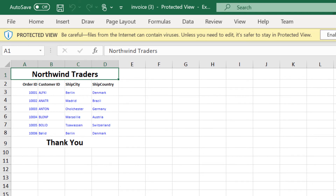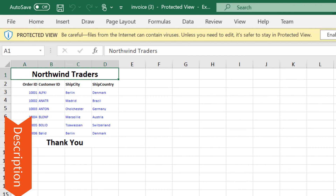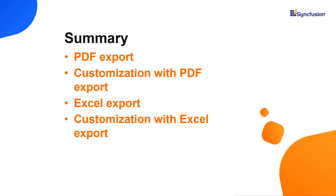To learn more about the customization options available in PDF and Excel export, please visit our documentation page through the link in the description part below. Now let me summarize what we have seen so far. I have shown you how to enable PDF exporting in the data grid component and export grid data to a PDF document. Next I showed you the different customization options available for PDF export. Then I showed you how to export the grid data to an Excel document and the available customization options in Excel export.